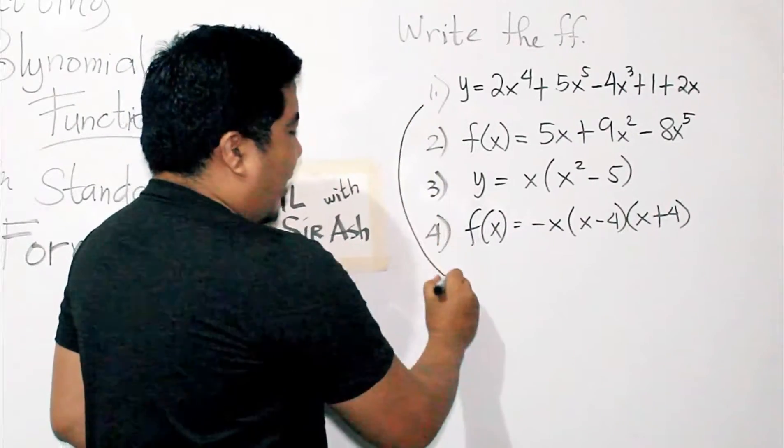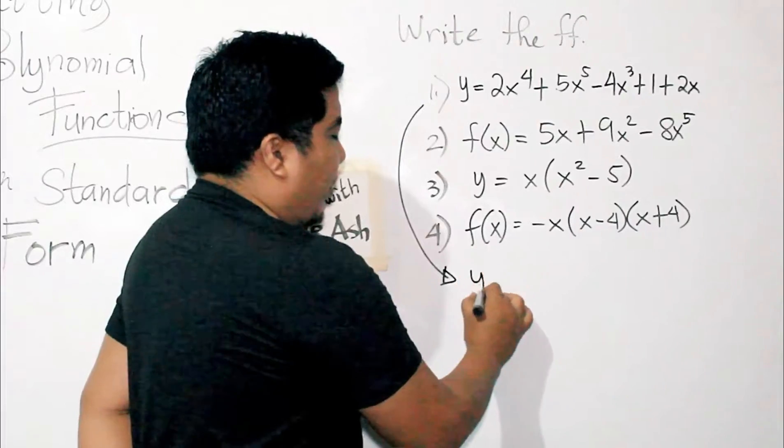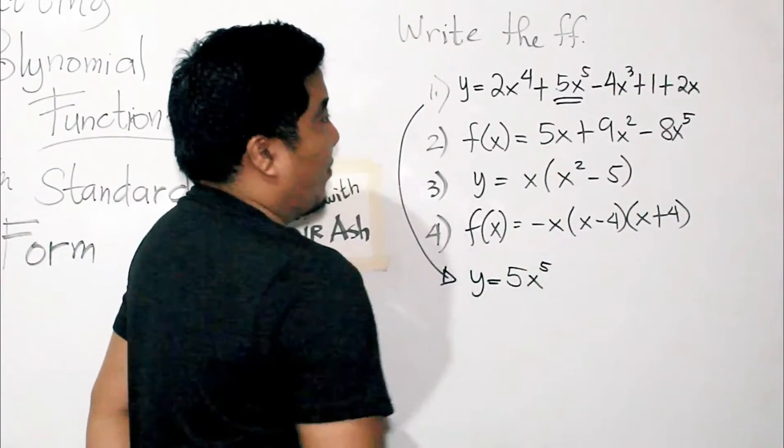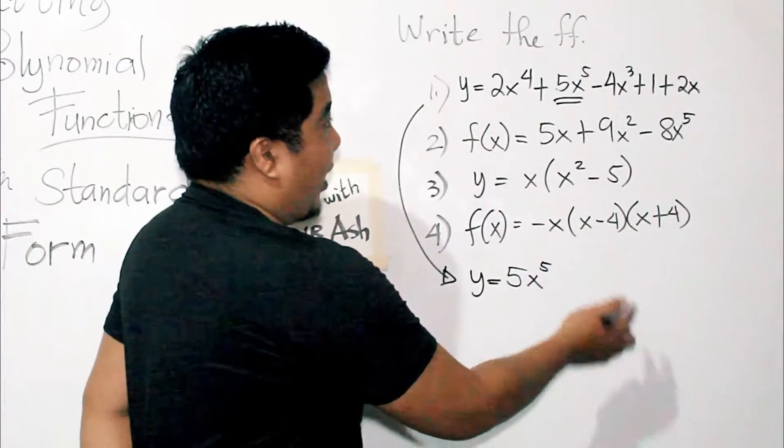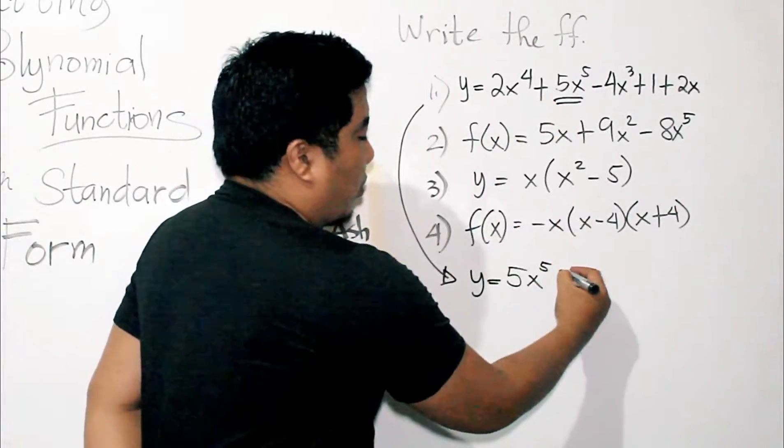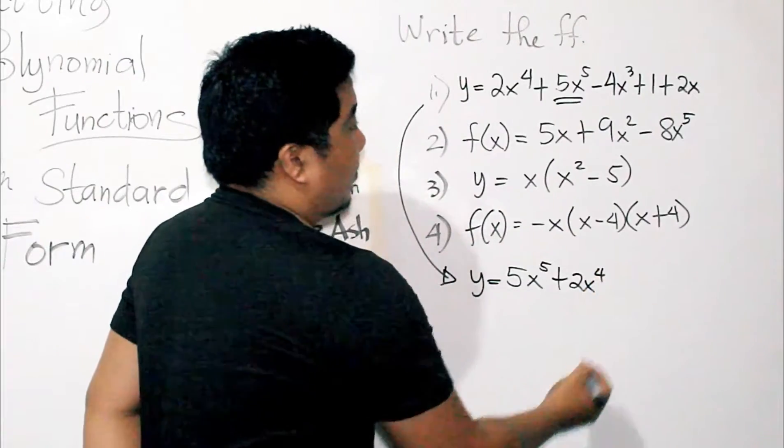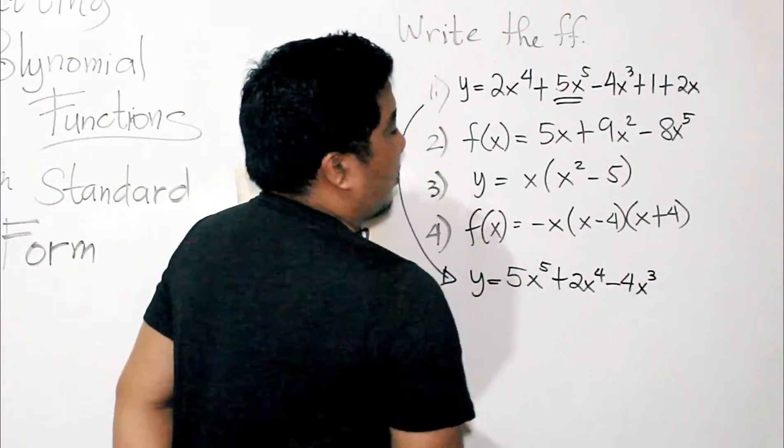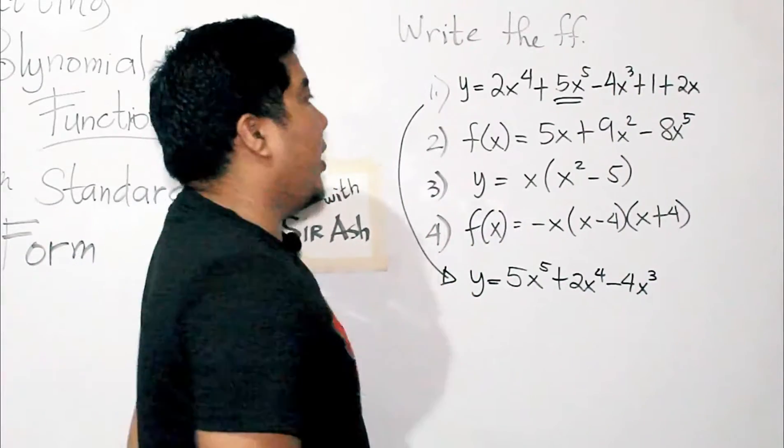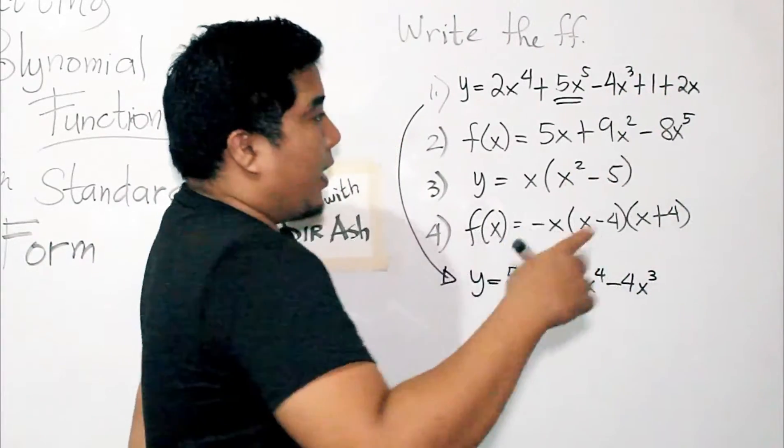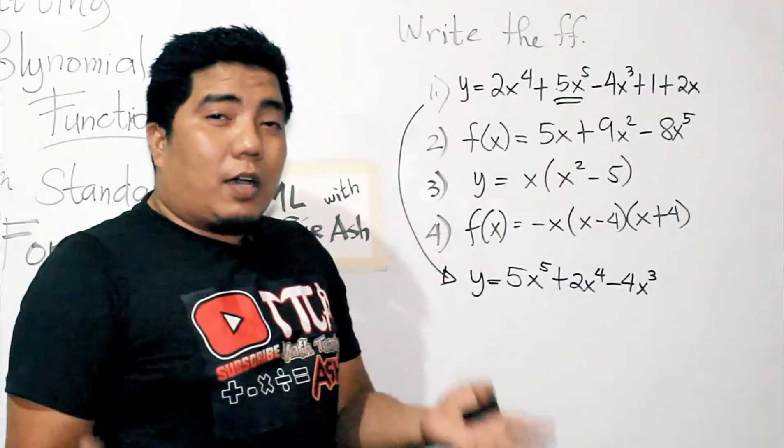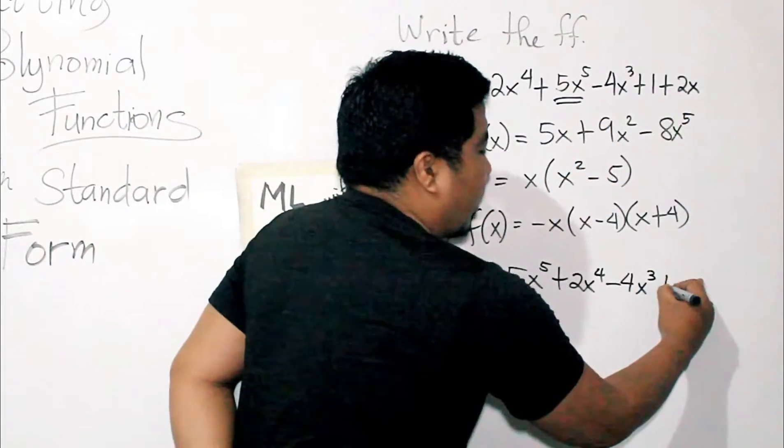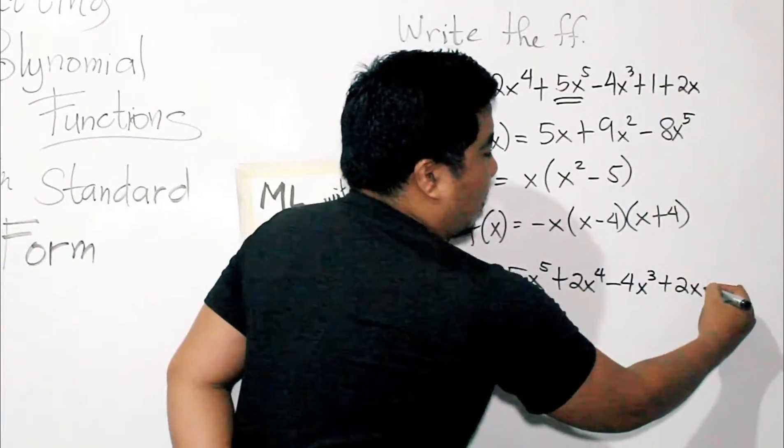So, what we need to do is we will write this in such a way that the first one will be written, this one. So, that is 5x to the power of 5. Followed by the next degree or the next exponent which is this one. So, that is positive 2x to the 4th. And then followed by the next exponent that is cube. So, that is 4x cubed. I copied the sign, be careful in the signs. And we have cube, the next is squared. So, we don't have any quadratic term here or the power of 2. So, we have the power of 1. So, that is the next. That is plus 2x.